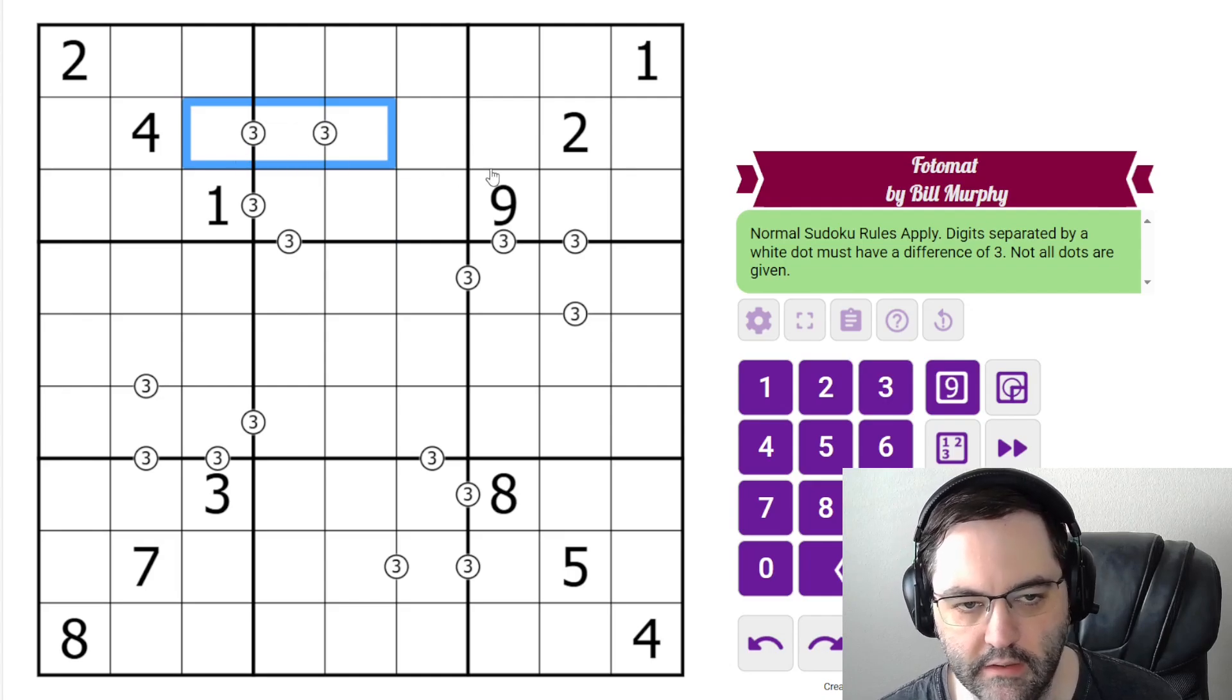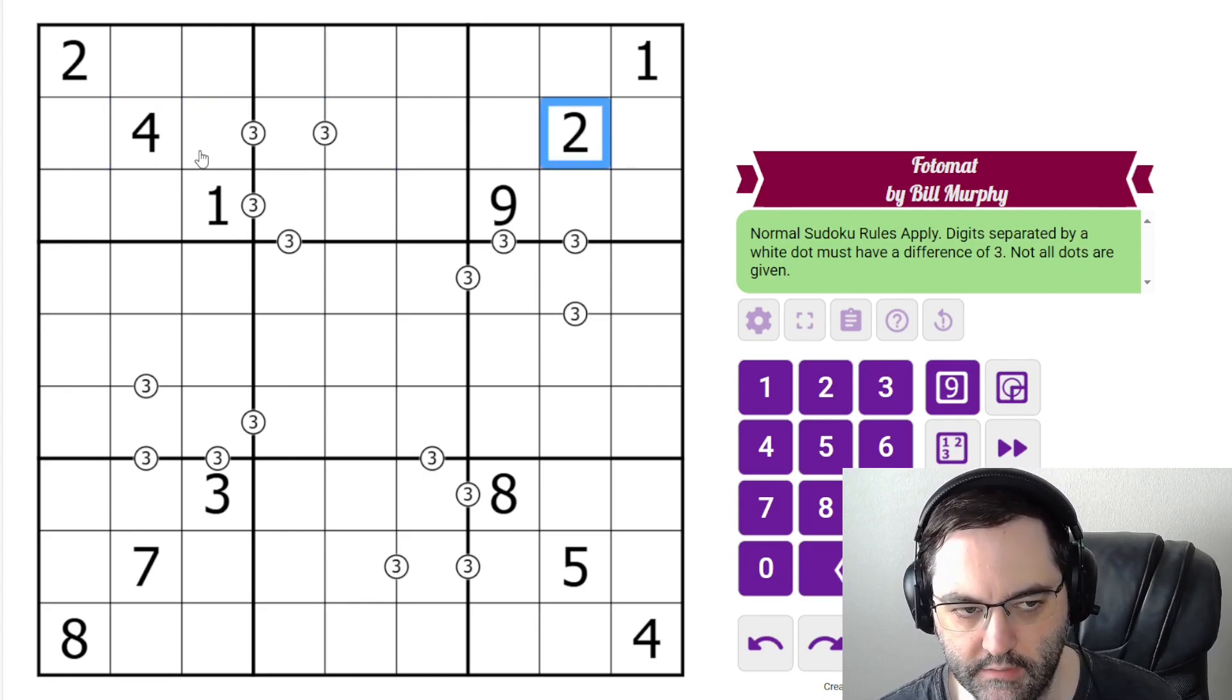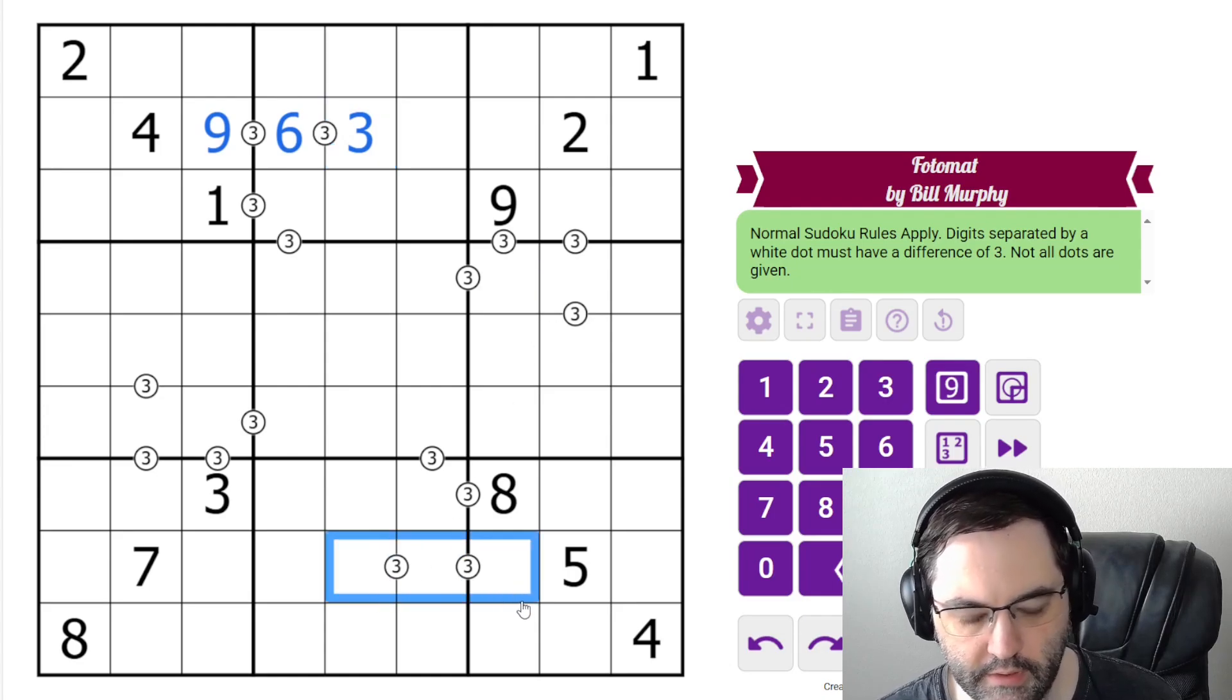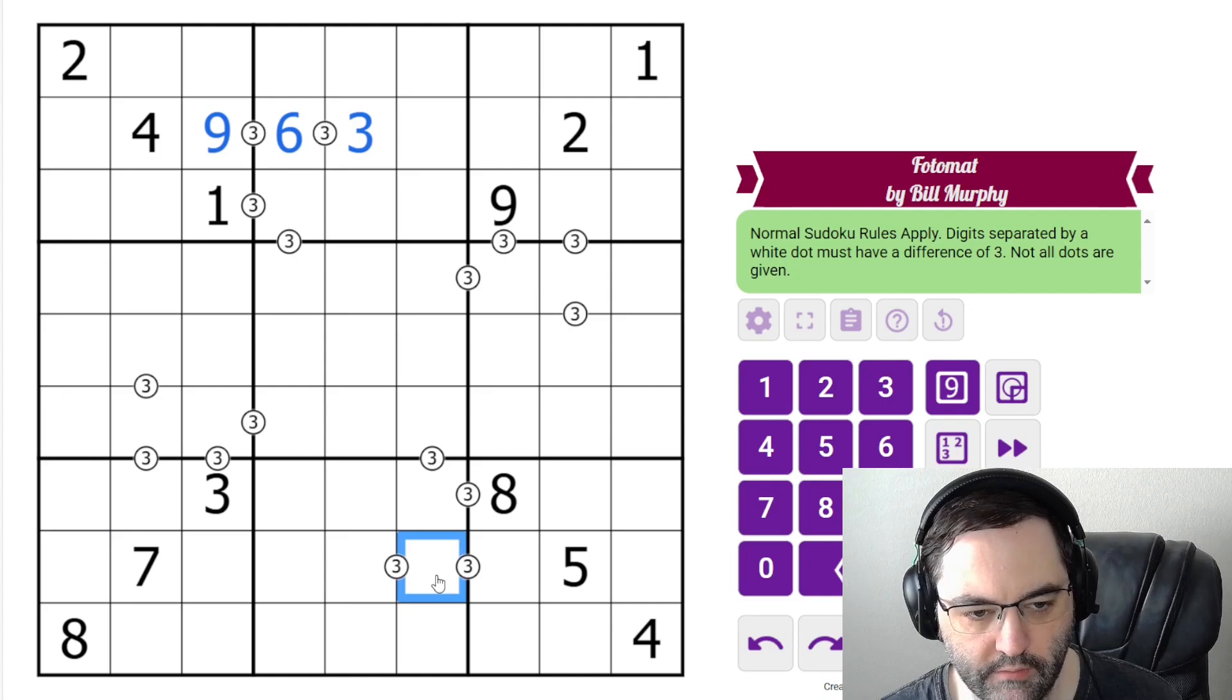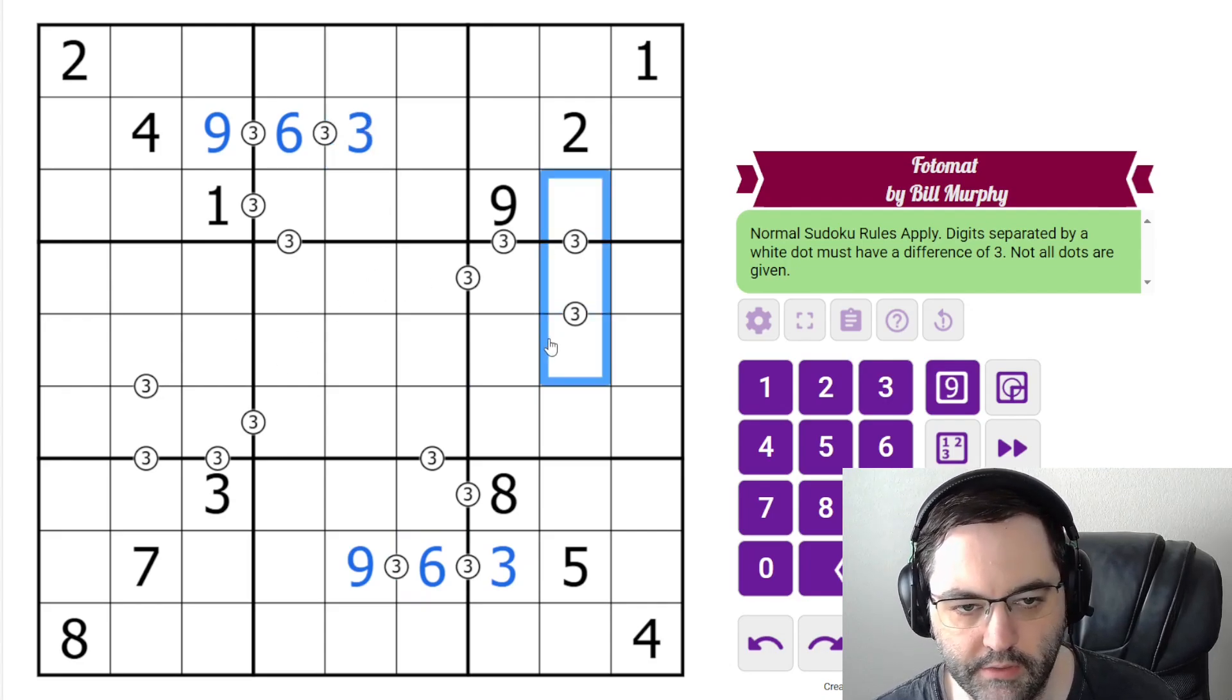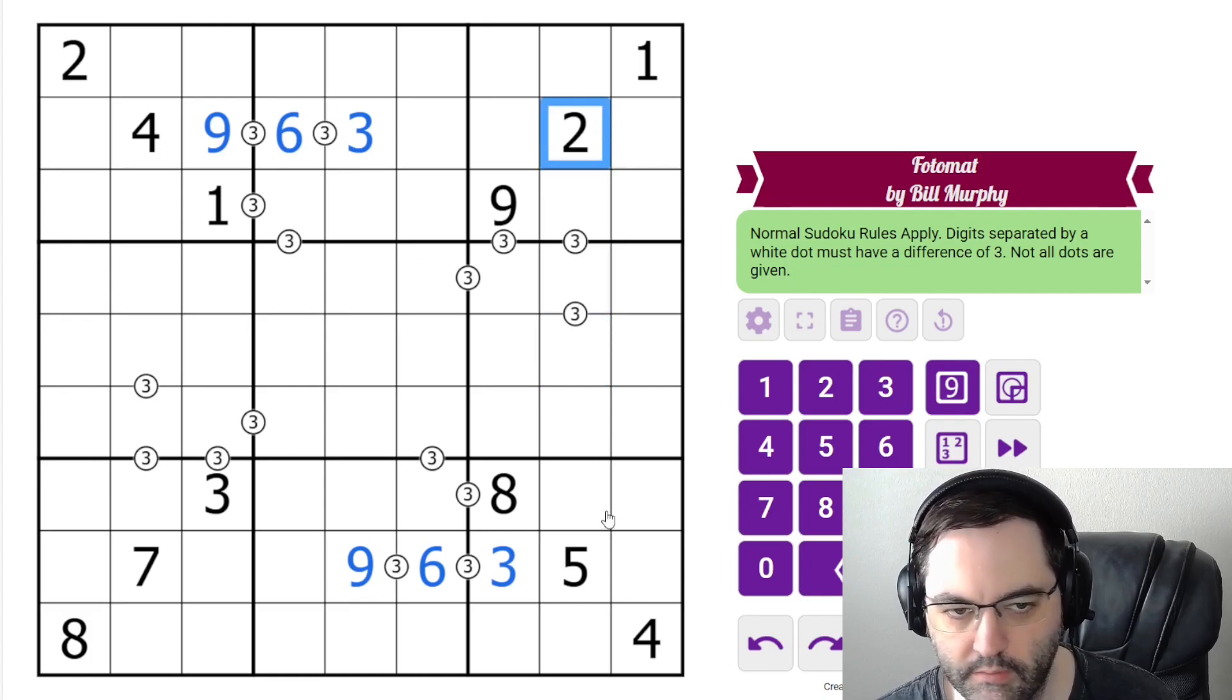So what we can do with these is consider which of the three triples this can be. It can't be one, four, seven. It can't be two, five, eight. So it is three, six, nine. The six will always go in the middle, but we can actually do better because there's a three here. We can resolve the ordering. All right, this one down here can't be two, five, eight or one, four, seven. So again, three, six, nine. This time we have a nine here and three here. These two aren't as forced yet. Let's see if we can figure out what they are though.